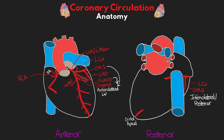Our first real big branch is the acute marginal artery, also known as the right marginal. Just as we had the obtuse marginal on the left side, here on the right side we have an acute angle — hence the name. We can have multiple branches of the acute marginal, and these go out to perfuse the right ventricle. The right coronary artery continues along the AV sulcus and wraps around to the posterior side of the heart, where we have another important branch called the atrioventricular, or AV nodal artery, which perfuses the AV node. This is another one that may originate from the left circumflex in some people.